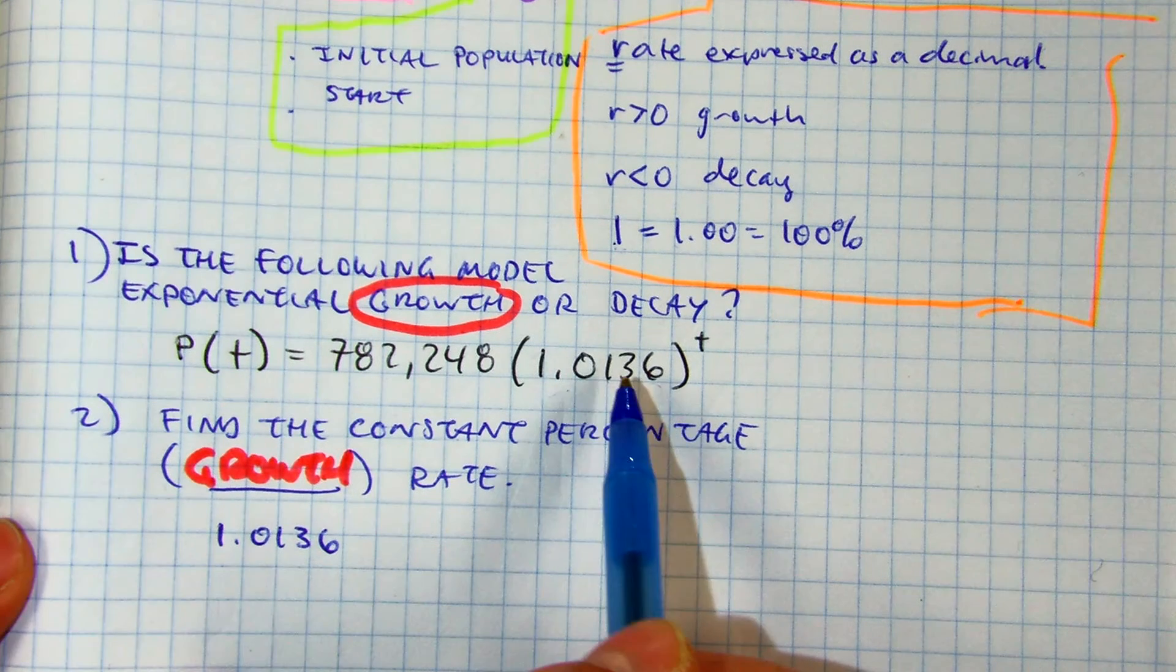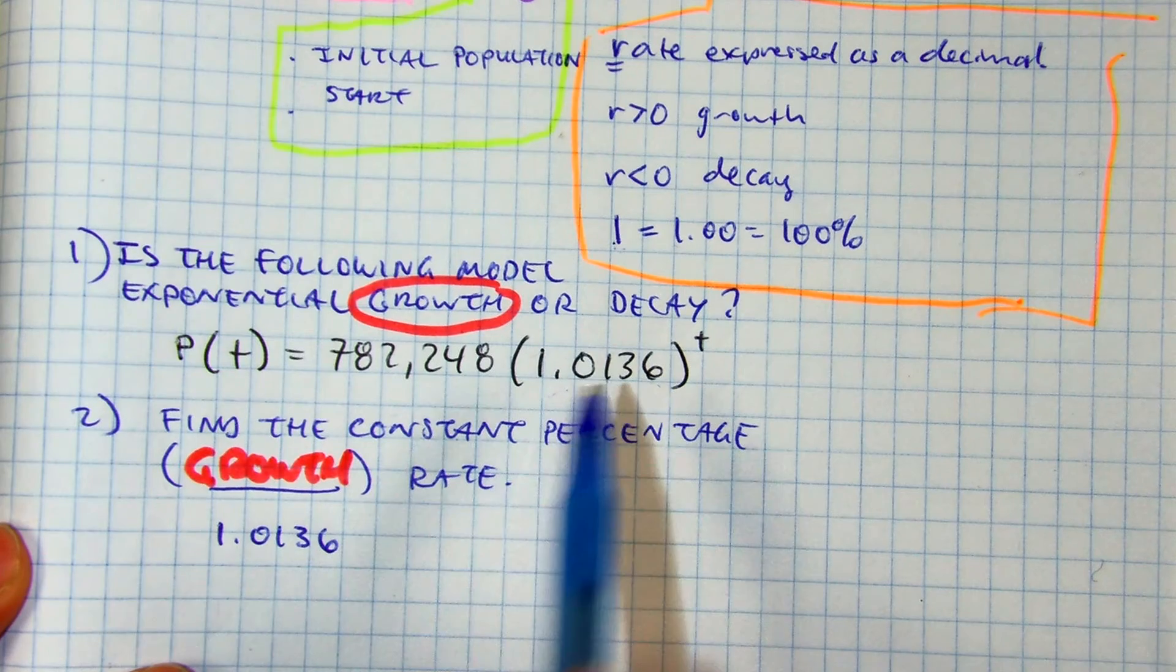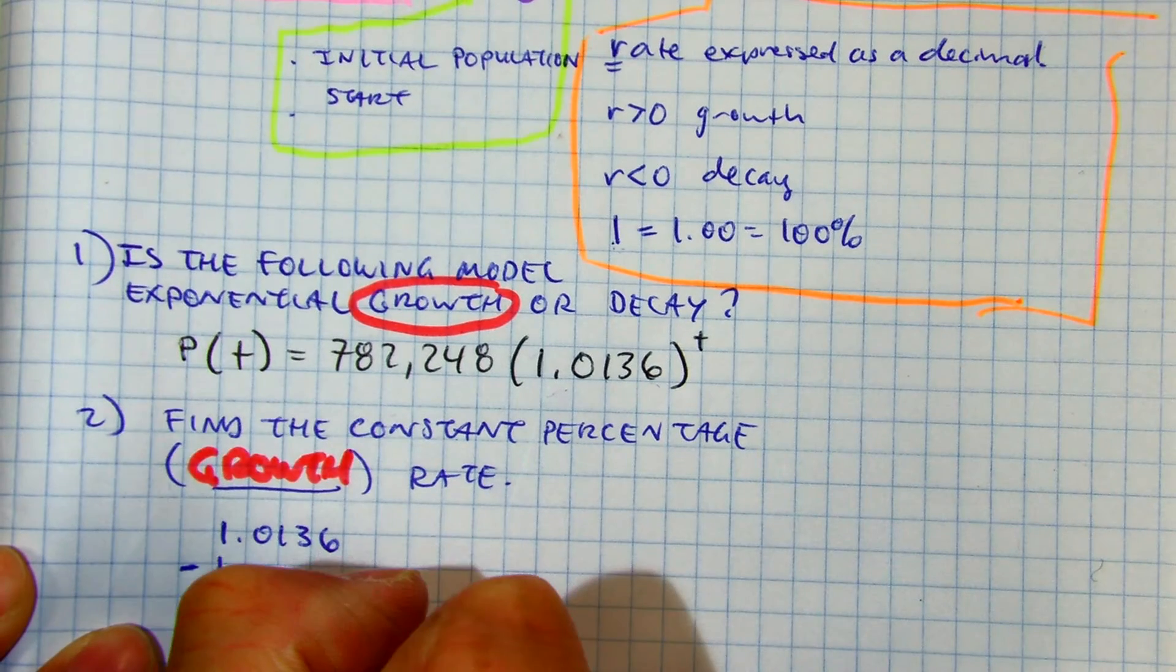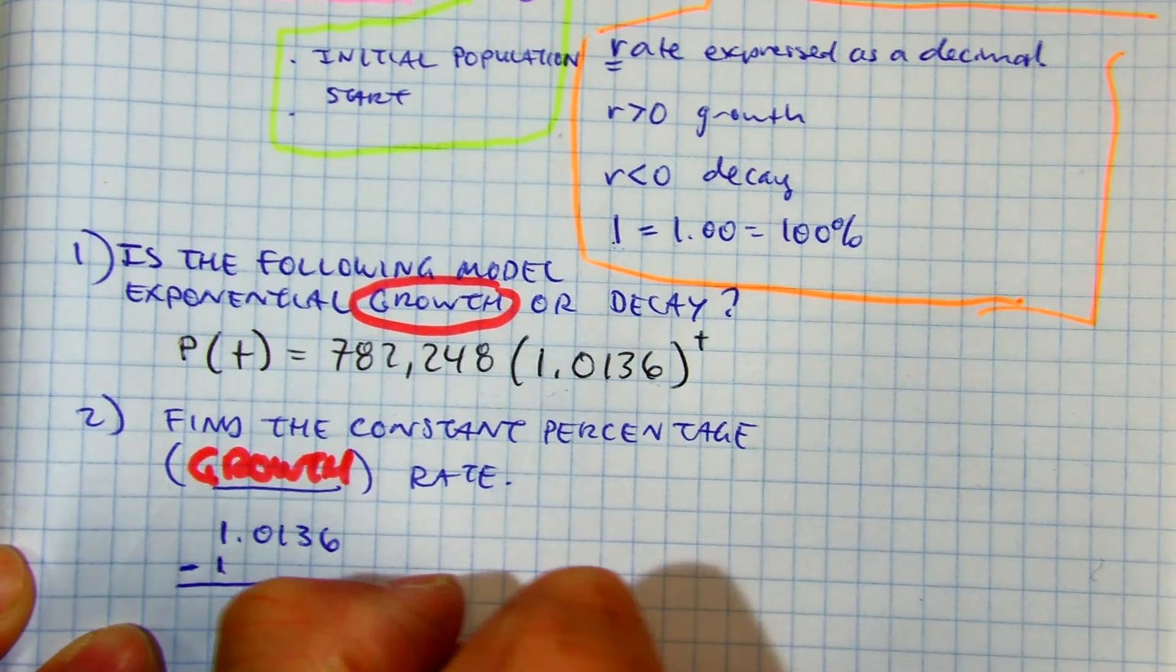Why do you have to have 100% growth? Well, you want it to go up. So if I subtract 1 here, I get this: 0.0136.